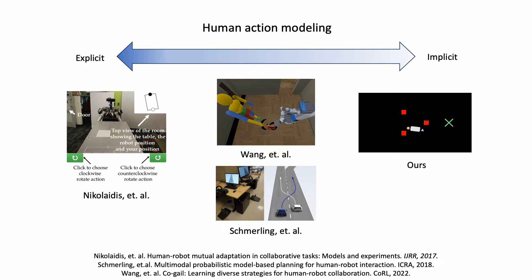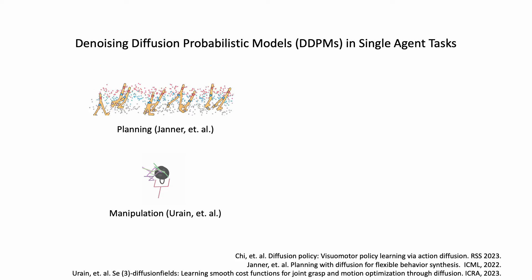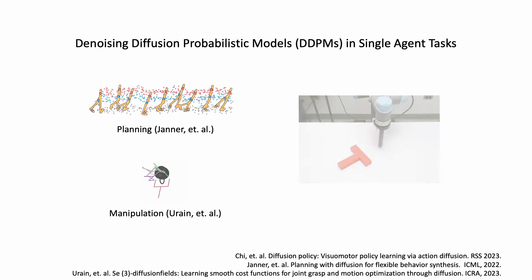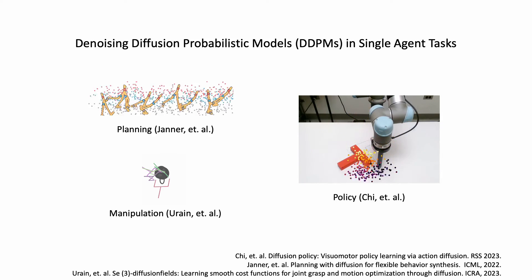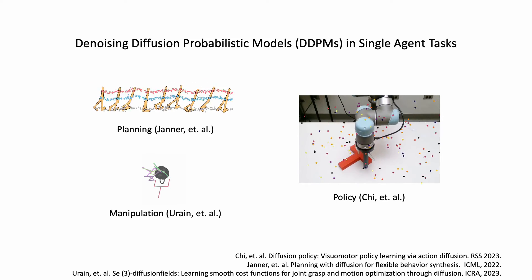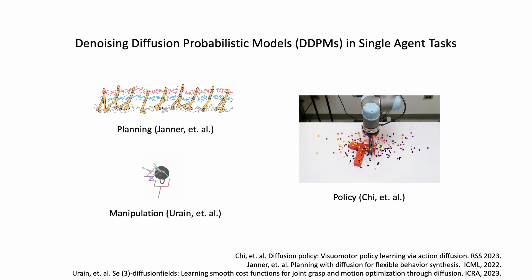In this work, we further advance the use of generative modeling in HRI by directly predicting sequences of future human and robot actions. Recent successes in learning single-agent behaviors with diffusion probabilistic models, including demonstrating multi-modality on sequential tasks, show promise in application to human-robot interaction.